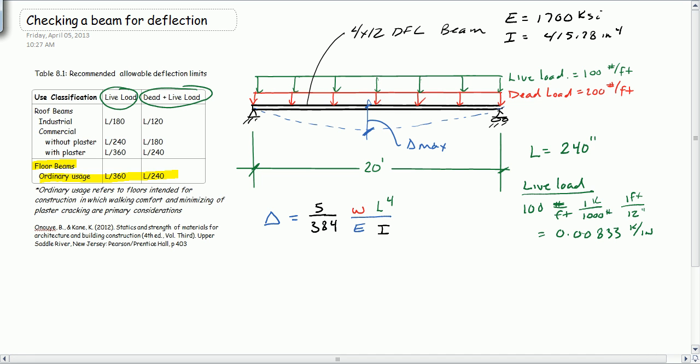Our total load will be 300 pounds per foot times 1 over 12,000 for the same reason to get it worked out, and we get 0.025 kips per inch.